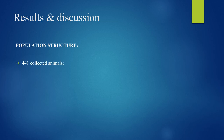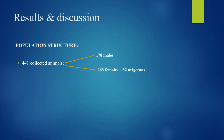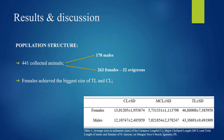441 animals were collected, of which 178 were males and 263 were females, of which 32 were ovigerous. Females achieved the biggest size in total length and carapace length, while males achieved the biggest size in major cheliped length.